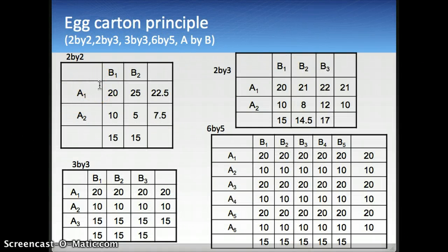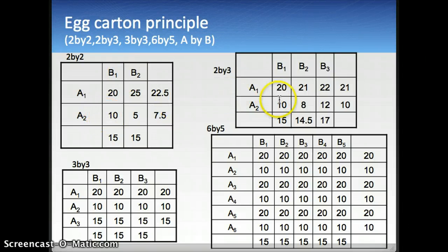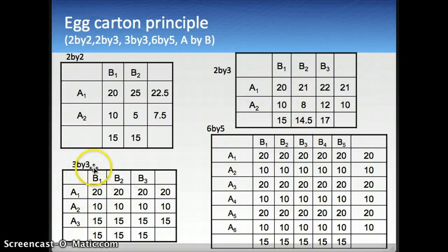We can think of this as an egg-carton principle. The simplest form is two factors, A and B, with two levels each. If we apply the same principle to a factor A with two levels and a factor B with three levels, we get a two-by-three egg-carton. You can have the same thing for a three-by-three matrix, or a six-by-five, or ten-by-ten, or whatever your heart desires.